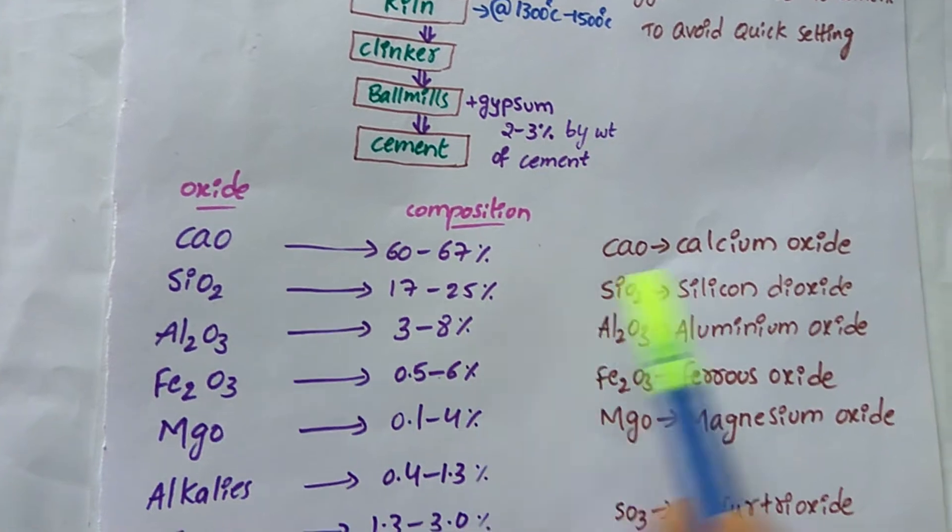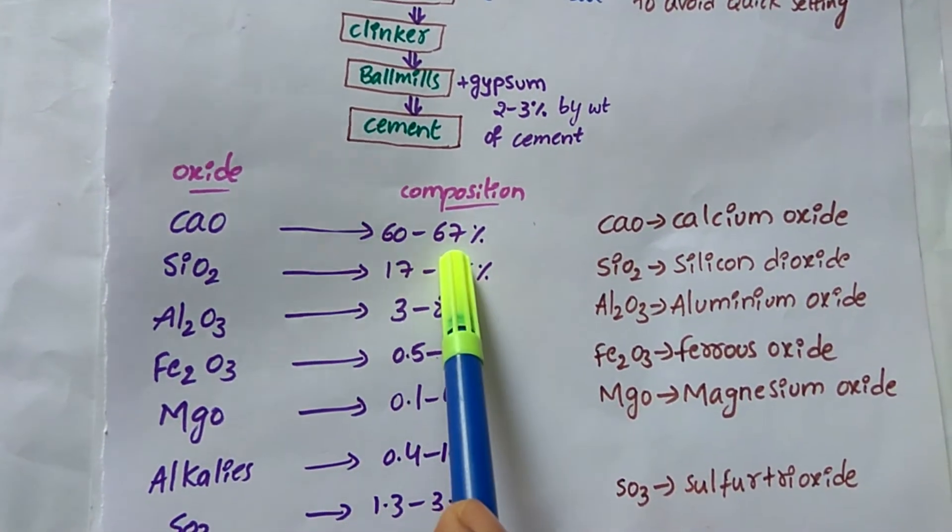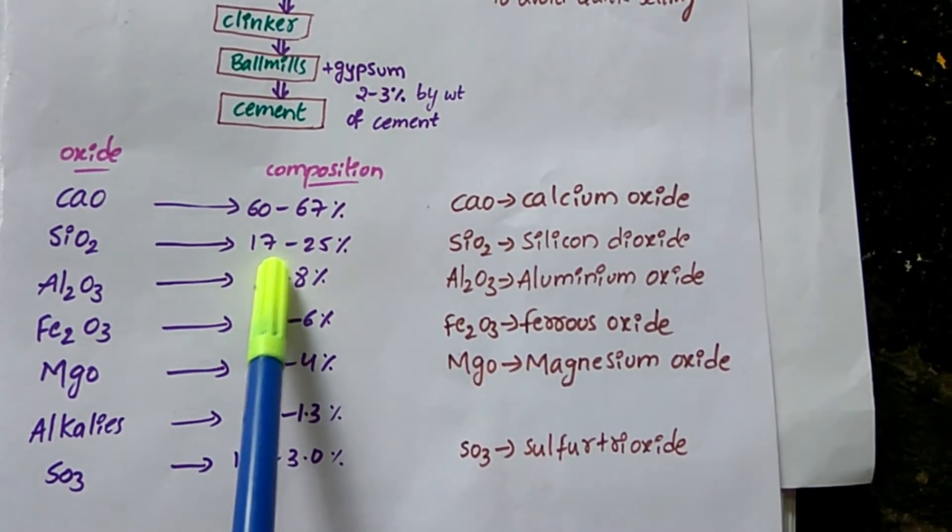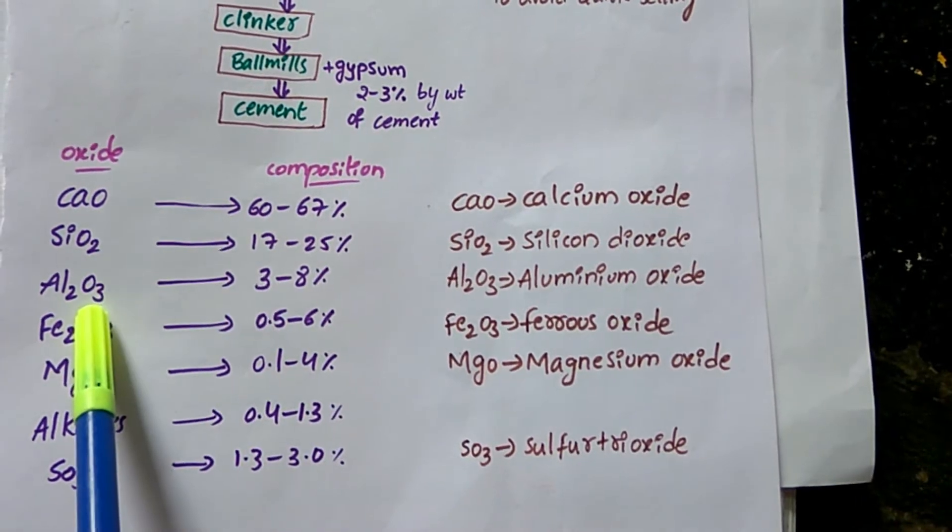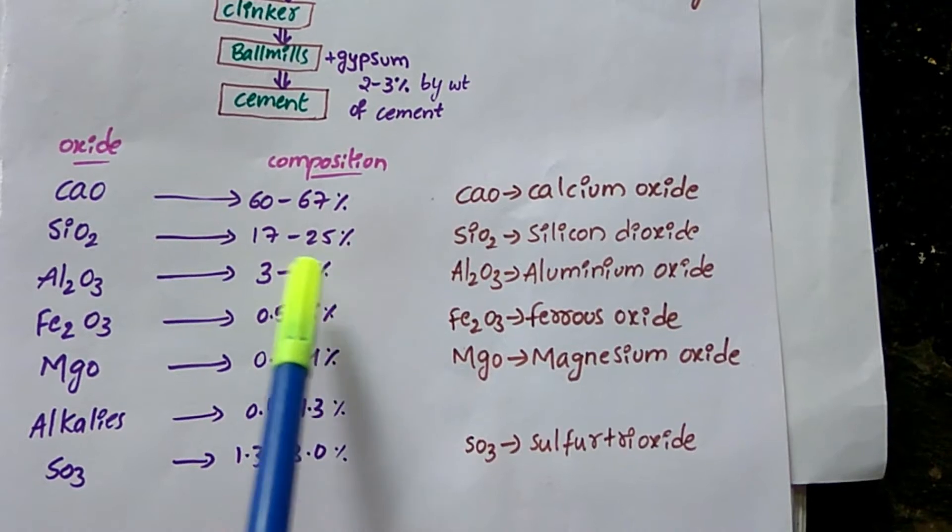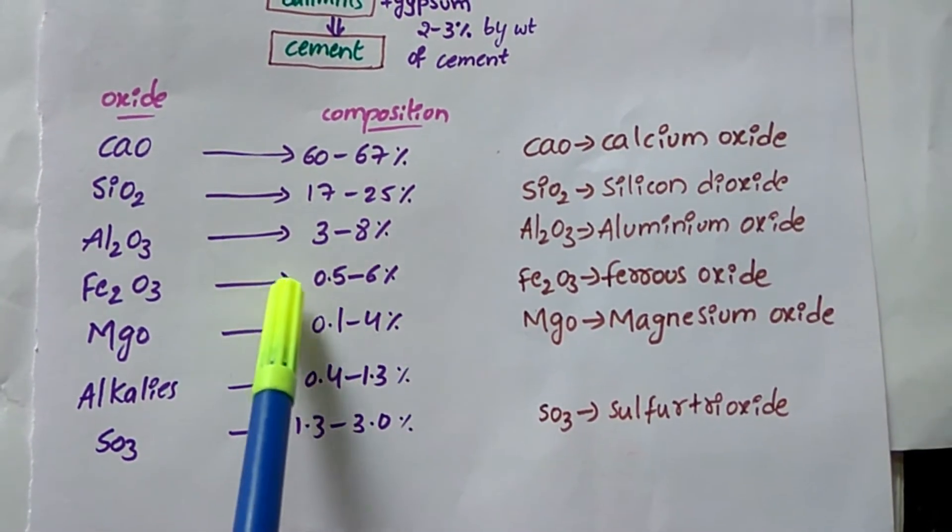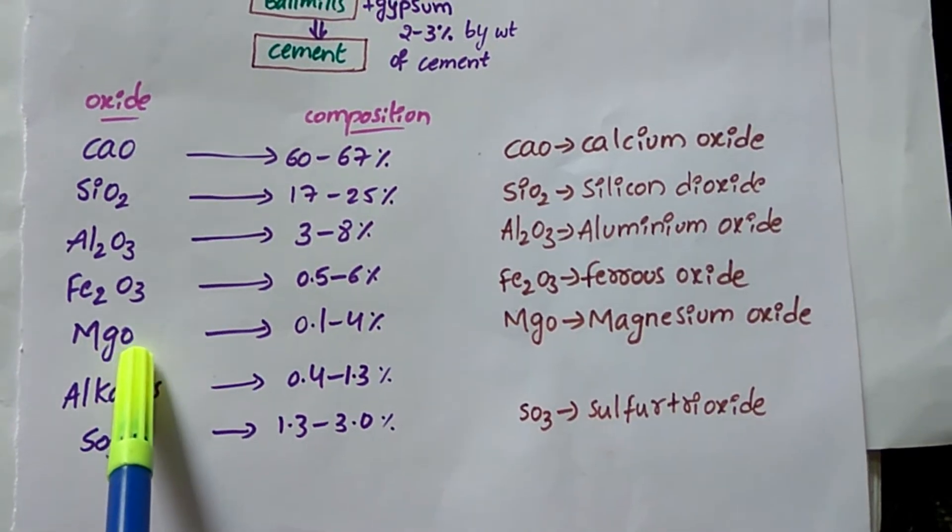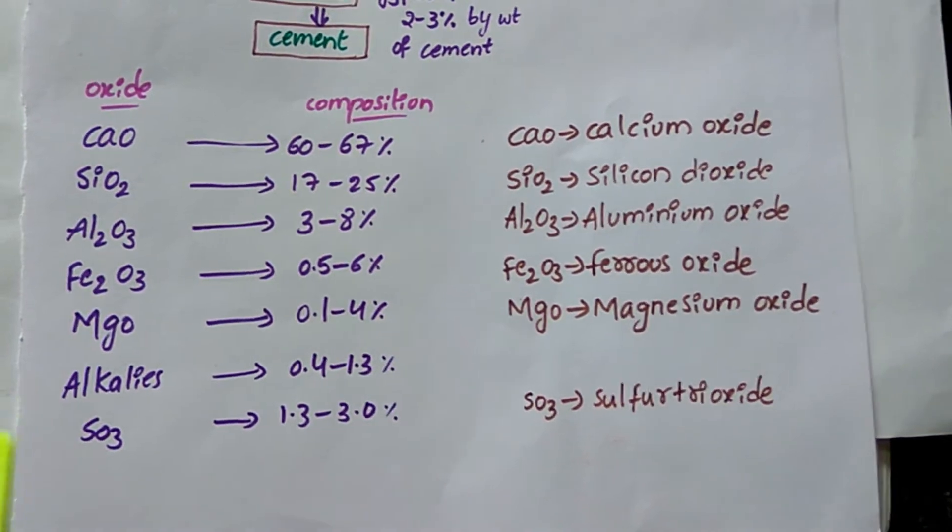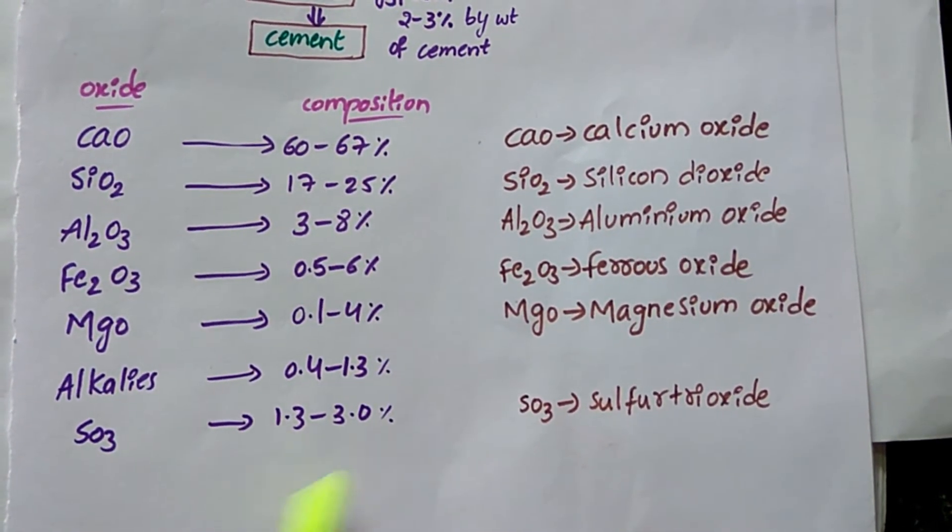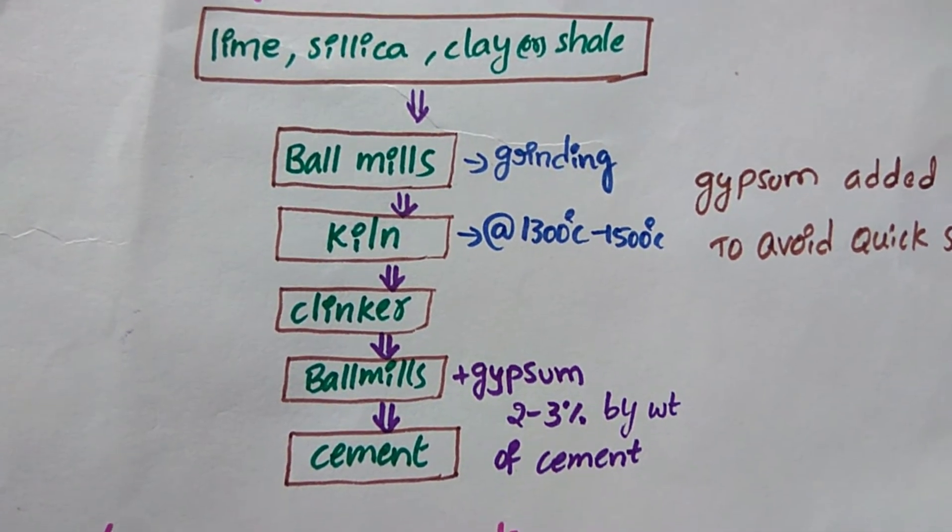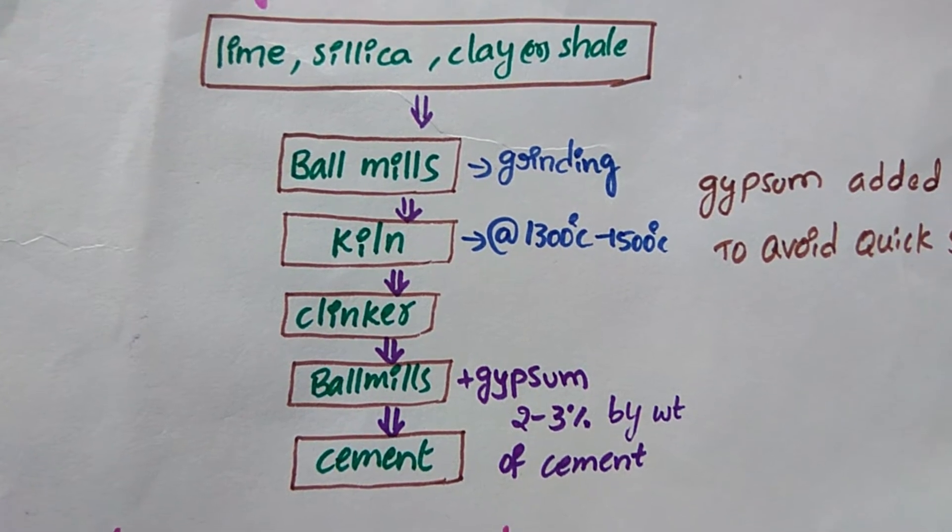in percentage-wise: Calcium oxide (CaO) 60 to 67%, silica dioxide (SiO2) 17 to 25%, aluminum dioxide (Al2O3) 3 to 8%, ferrous oxide (Fe2O3) 0.5 to 6%, magnesium oxide (MgO) 0.1 to 4%, alkalies 0.4 to 1.3%, sulfur trioxide (SO3) 1.3 to 3%. All these percentages—lime, silica, clay, Al2O3, Fe2O3,